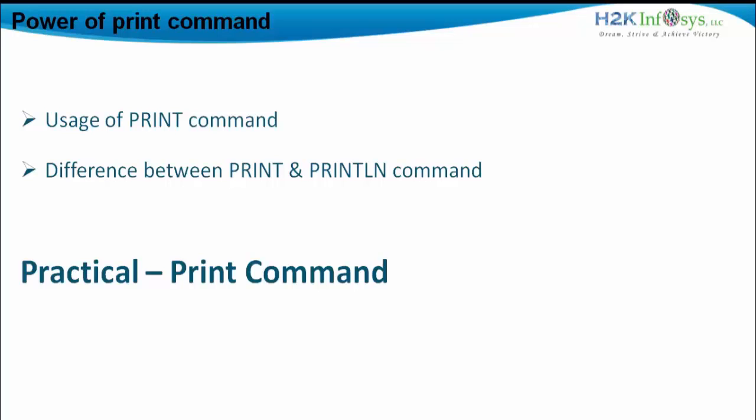We will understand later what an access modifier and inheritance are. For now, understand that system is an inbuilt class of Java. It uses a method called the out method, which is basically used to throw the results in the console by using the print command or the print method present in the print stream class of the IO package.